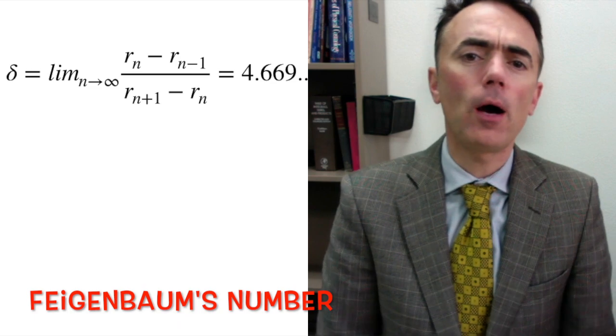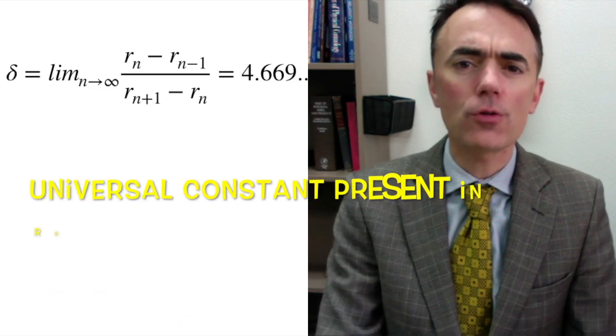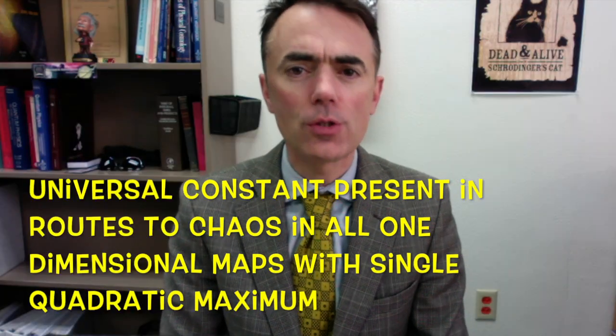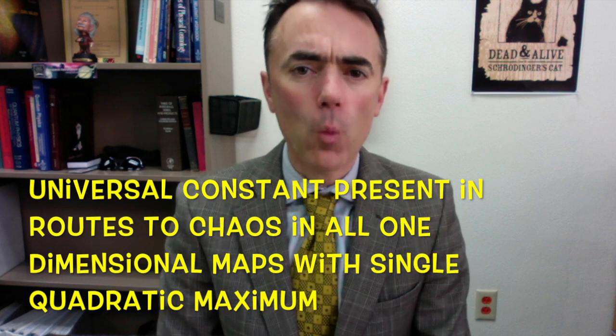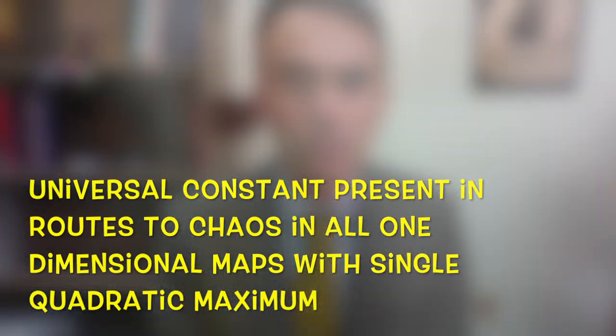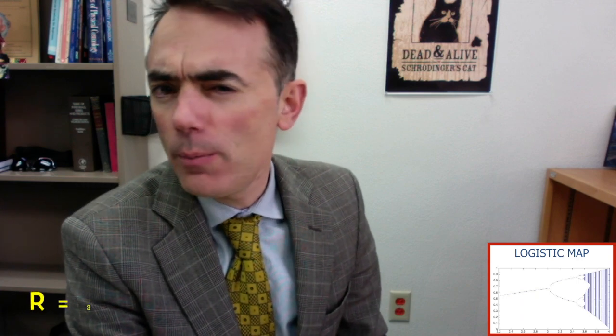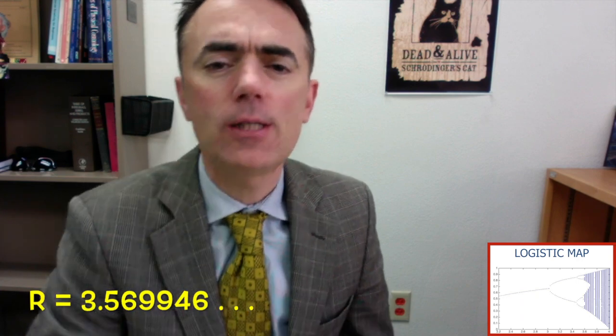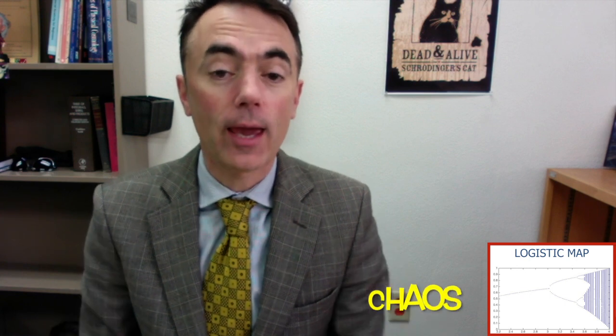It is called the Feigenbaum constant and it is a universal constant found in the route to chaos of all of the one-dimensional nonlinear maps with single quadratic maximum. So the rate at which these period doublings happen is faster and faster. For r larger than about 3.57 we don't have period density anymore. Then we have chaos.